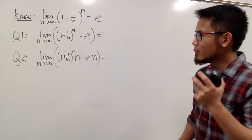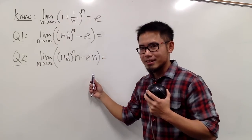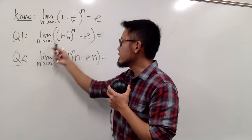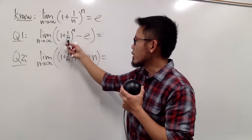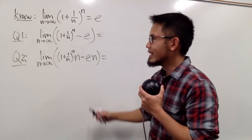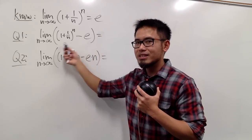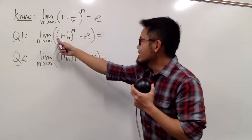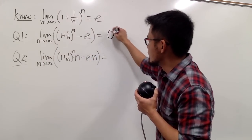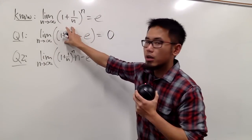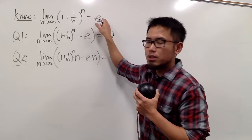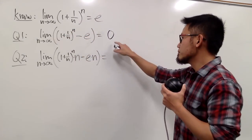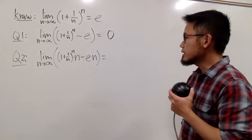We have two limit equations here. The first one is the limit as n goes to infinity of the same expression minus e. Take a guess — what's the answer? This right here is just equal to 0, because the expression approaches e, and e minus e gives you 0.